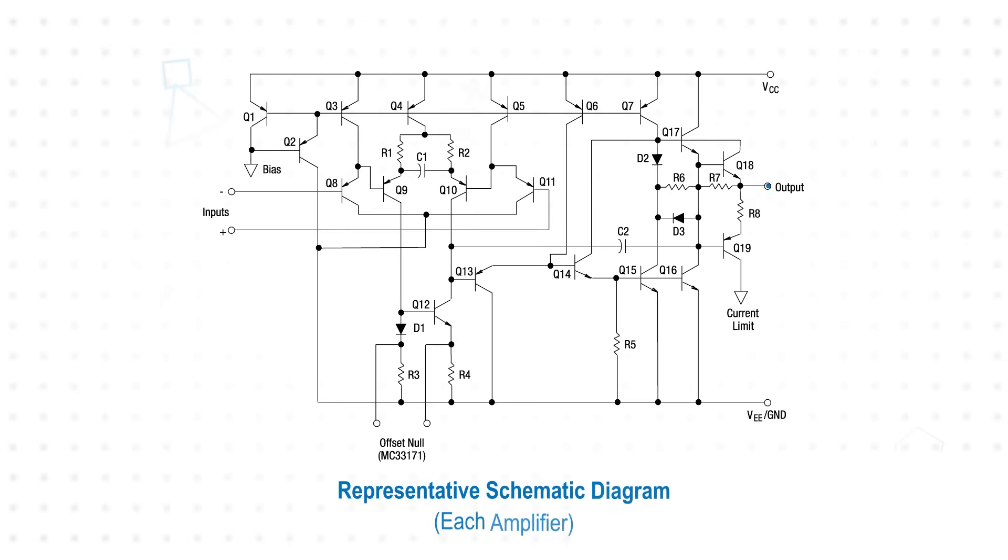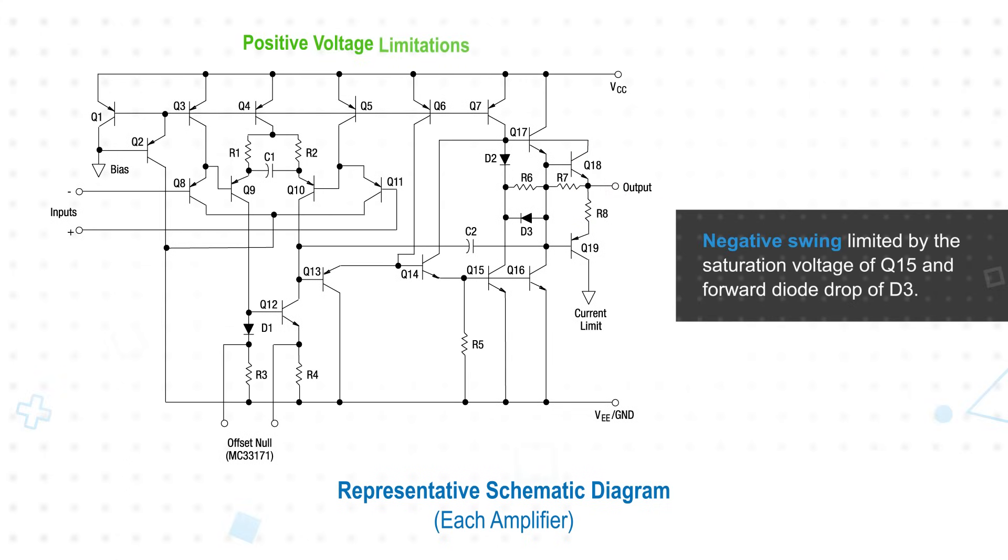The all-NPN output stage, eliminating the typical PNP output emitter follower, enables the wide output voltage swing as the positive swing is limited only by the saturation voltage of Q7, the VBE of Q17, and the voltage drop across R5.